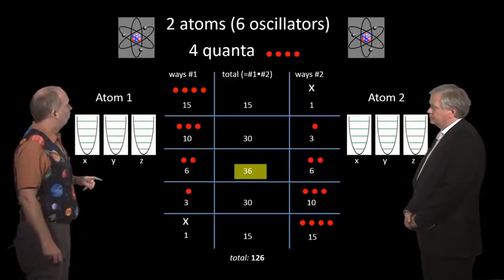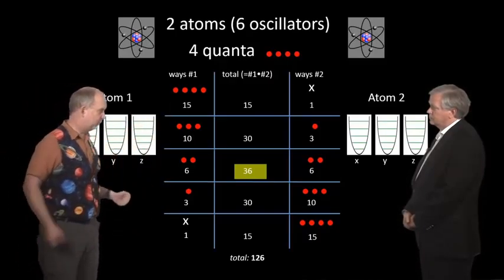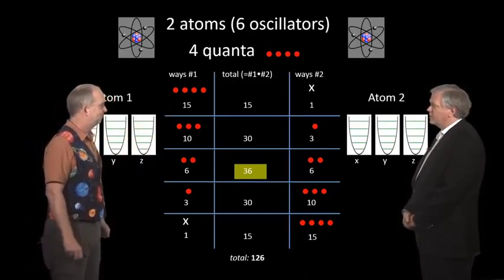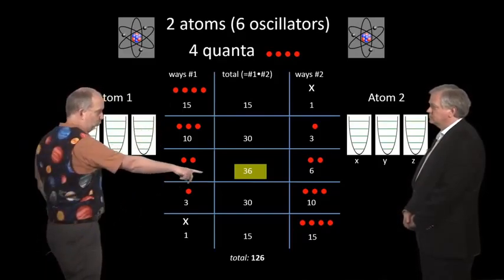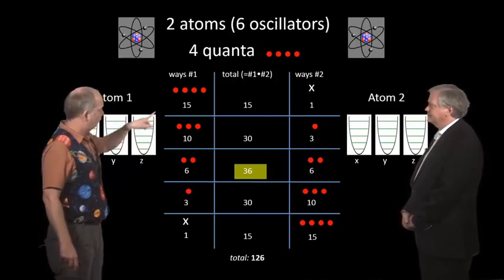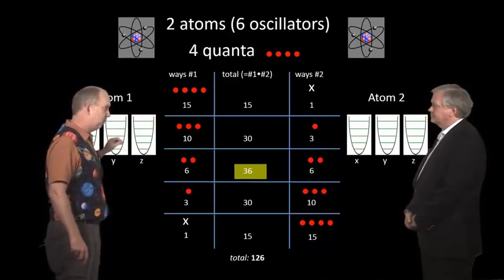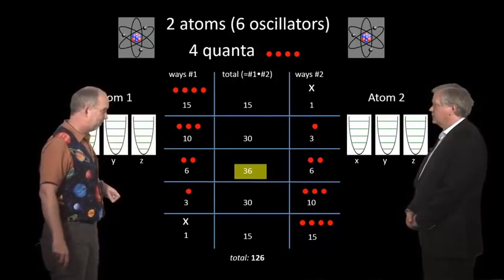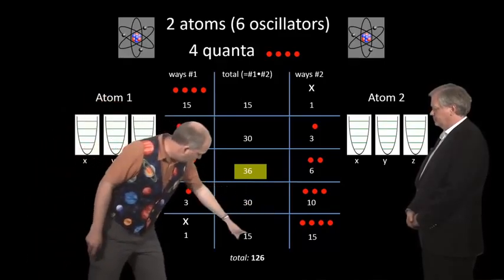So we could have, for example, all four quanta over on this atom and none over there. So I've got all the energy and you've got nothing. So we've already figured out that's 15. Yeah. Or you could have all the energy and I could have none, which is down the bottom. That's another 15. Yeah. So there's, in this case there's 15 possible states for me, but only one state for you, everything in the ground area. Yep. Whereas the other way around would be 15 for you and only one for me.